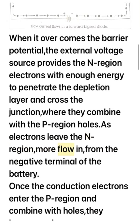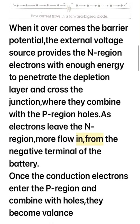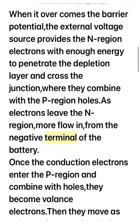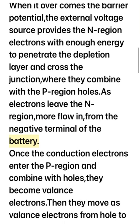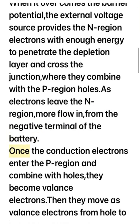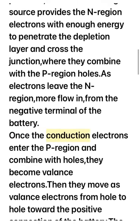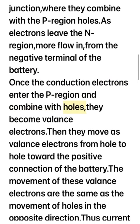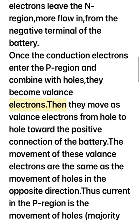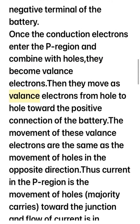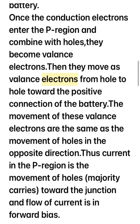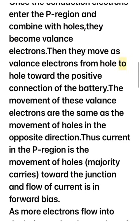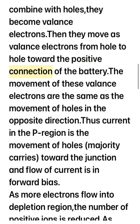more flow in from the negative terminal of the battery. Once the conduction electrons enter the P region and combine with holes, they become valence electrons. They then move as valence electrons from hole to hole toward the positive connection of the battery.